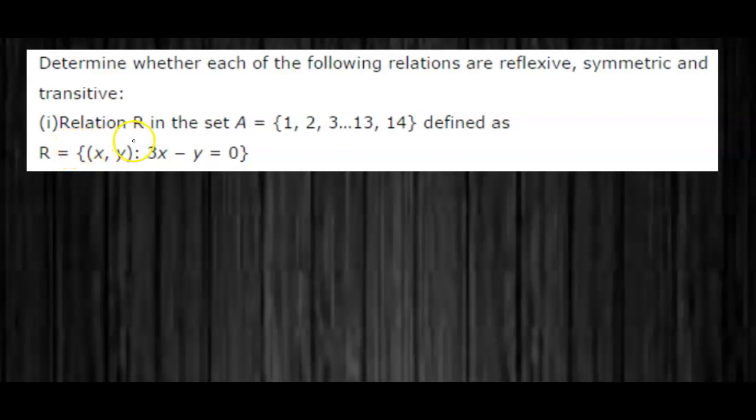The first part: relation R in the set A = {1, 2, 3, ..., 14} defined as R = {(x, y): 3x - y = 0}.